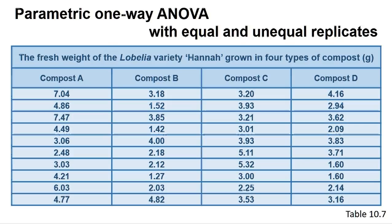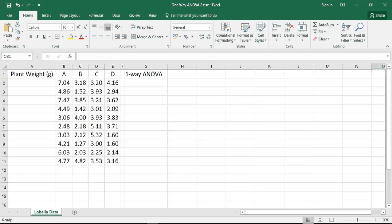If you get a significant result from the ANOVA, you may then wish to work out which samples are significantly different from each other. We cannot simply do a t-test for each sample pair combination, as this increases the likelihood of type 1 errors. Instead, there are many other tests collectively called post-hoc tests that can be carried out. In many cases, we prefer to use a test called the Tukey's test, although other tests such as the Games-Howell test will be suggested in the screencast if required.